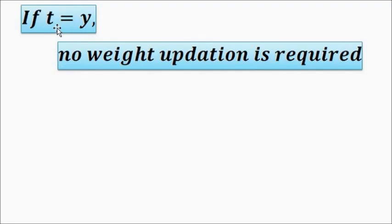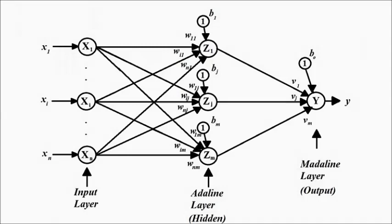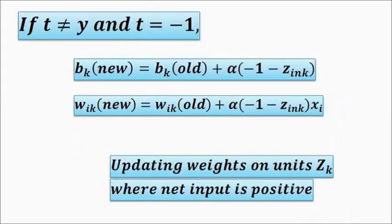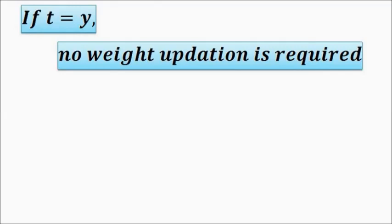This is the whole concept of the Multiple Adaptive Linear Neuron network. It is based on the Adaline and its key characteristic feature is the hidden layer consisting of multiple Adaline neurons. Please try to understand the weight update process carefully as it can be tricky. Watch the previous videos for foundational concepts on weight changes and learning rules. I hope you liked this video — please subscribe to Engineering Tutorial for more such videos. Have a great day, thank you.